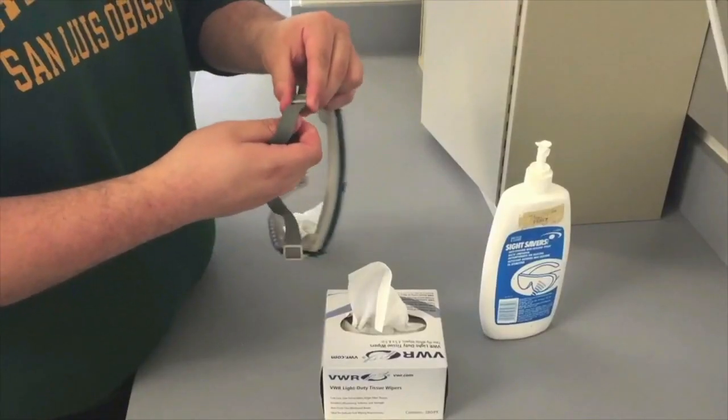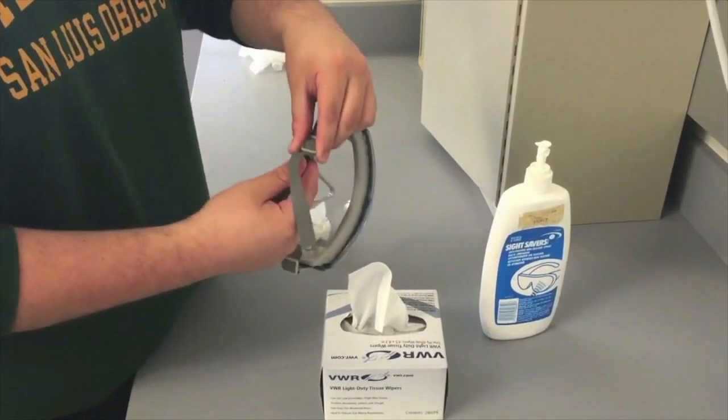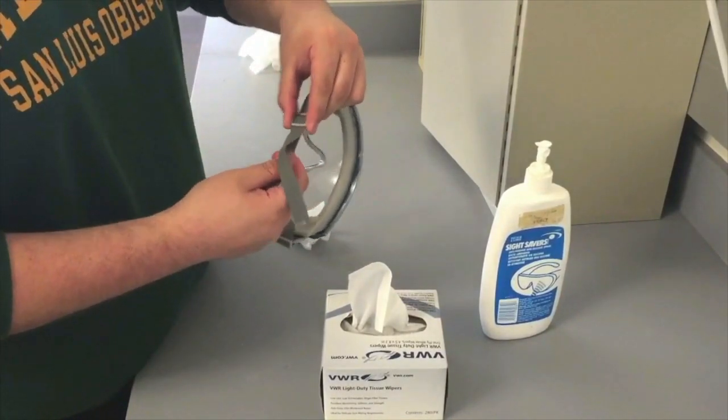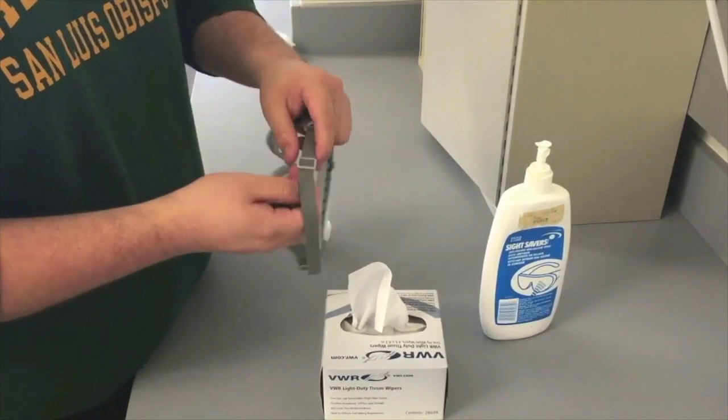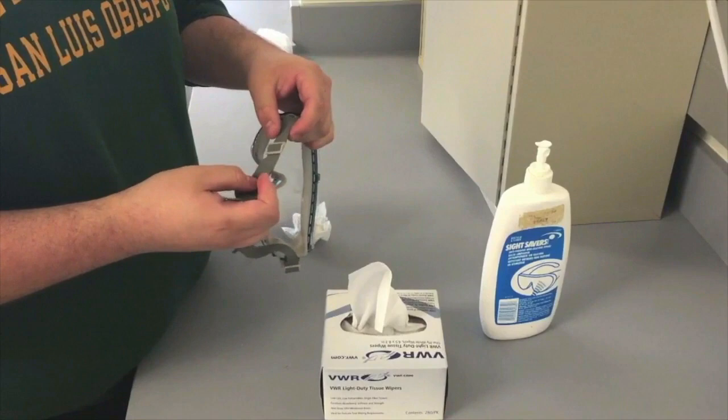To tighten your goggles, look at the loose end of the strap and pull it away from the goggles while holding the plastic on the straps. To loosen your goggles, push the strap towards the goggles through the plastic device.